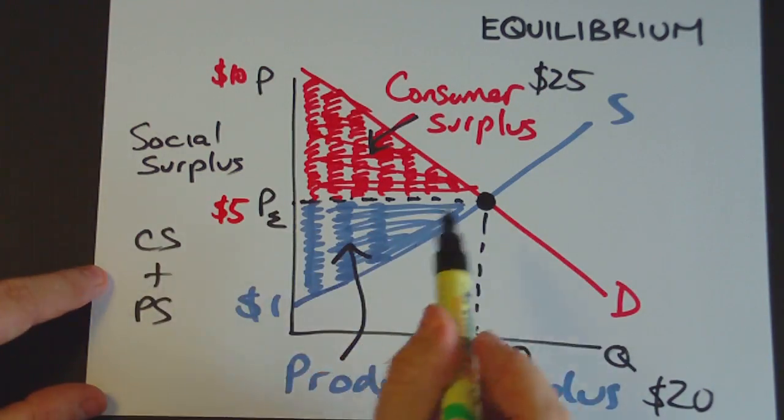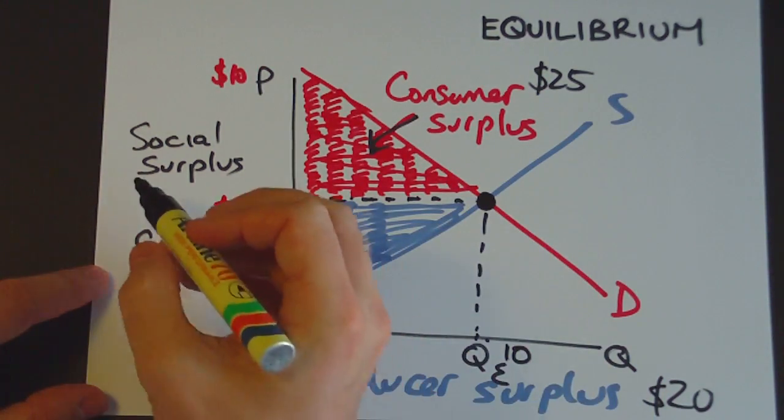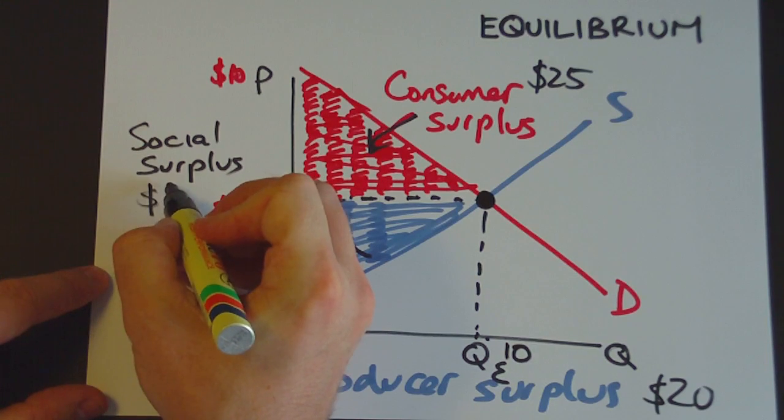And since the social surplus is equal to the consumer plus the producer surplus, the social surplus would be $45.